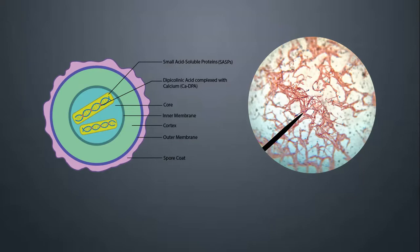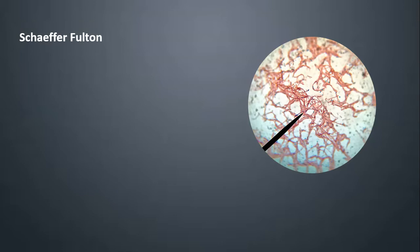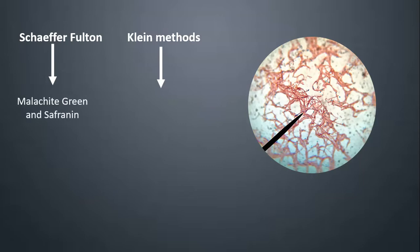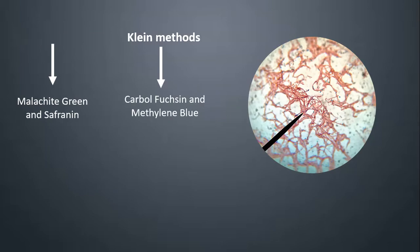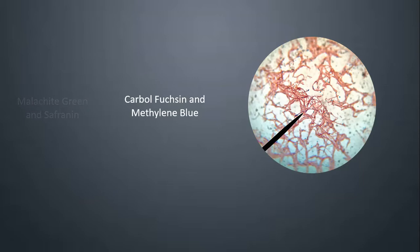In 1933, Schaefer and Fulton modified Dörner's Endospore Staining Method to make it faster, but heating with a Bunsen burner was still messy. There are two methods commonly used to stain bacterial endospores: the Schaefer-Fulton and Klein Methods. The main difference is the dyes used — malachite green and safranine in Schaefer-Fulton, versus carbol fuchsin and methylene blue in the Klein Method. The Schaefer-Fulton Method is faster, which is why most microbiologists prefer it.